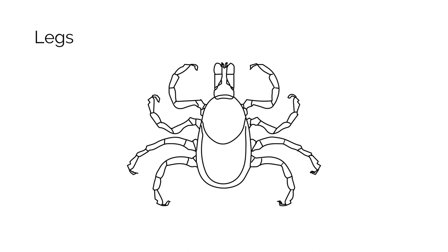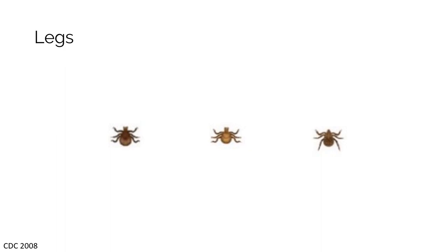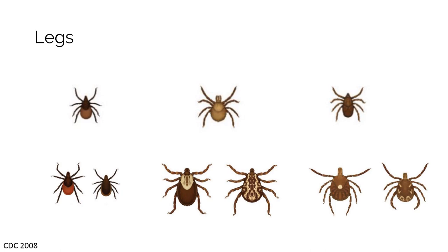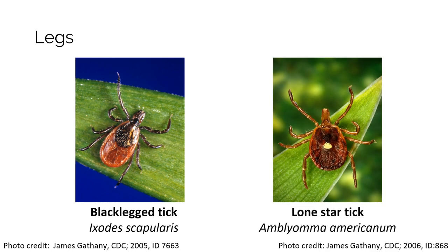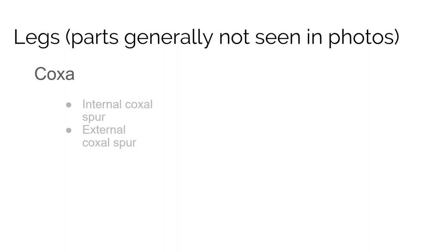Now for the legs. As we discussed earlier, ticks are arachnids, but the larvae have six legs. As they molt into nymphs and adults, they grow an additional pair of legs, giving them eight. The color of the legs will vary based on the species — for example, Ixodes scapularis have black legs while Amblyomma americanum have brown legs. The coxa and trochanters are generally not observable in enough definition within photos, but they are important when identifying a tick with a microscope. The coxa is the part of the leg that attaches to the body on the bottom or the ventral surface of the tick.